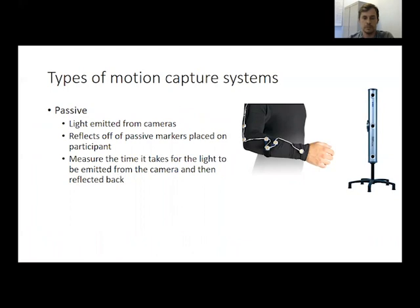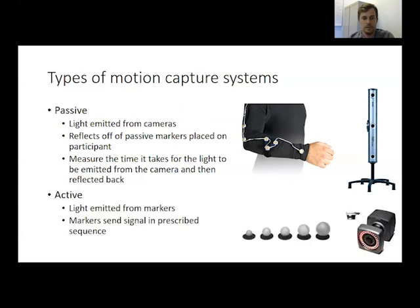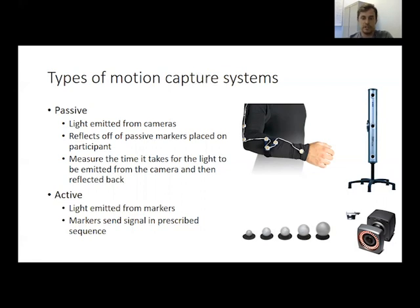There are multiple different types of motion capture systems. One type we use in our lab is a passive motion capture system, which uses light emitted from cameras to bounce off markers worn on the participant's body and back to the camera, measuring the time it takes for that round trip. There are also active motion capture systems, which use light-emitting markers — wired markers that send light out to the cameras in a prescribed sequence so the camera knows exactly which marker is tracking which part of the body.